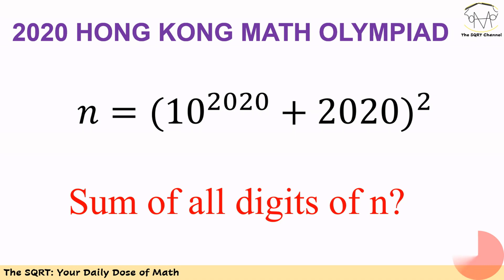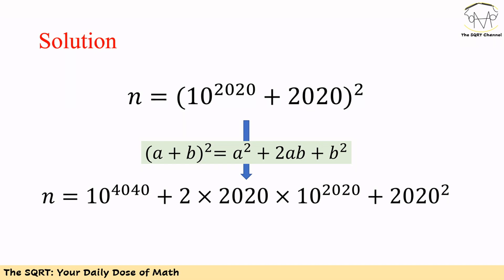To solve this problem, we're going to simplify n. To do so, we'll use an identity. Remember, (a + b)^2 = a^2 + 2ab + b^2.